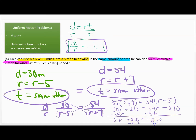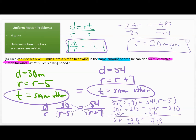Subtracting 210 from both sides: negative 24R equals negative 480. Dividing both sides by negative 24 gives R equals 20 miles per hour. That's Rich's rate without any wind. So when he biked 30 miles into the headwind he was traveling at 15 mph, and when biking 54 miles with the tailwind he was traveling at 27 mph.